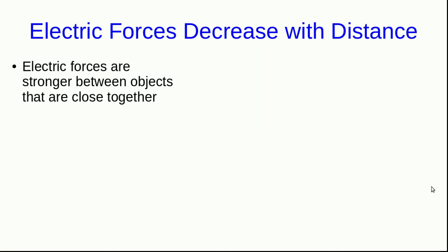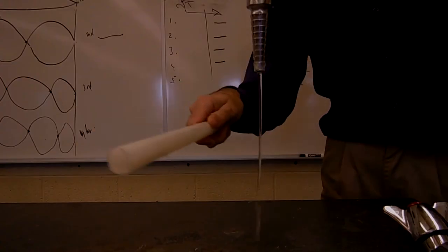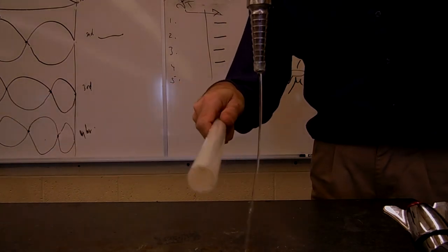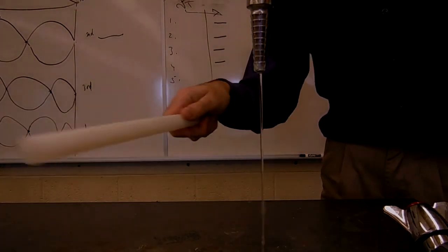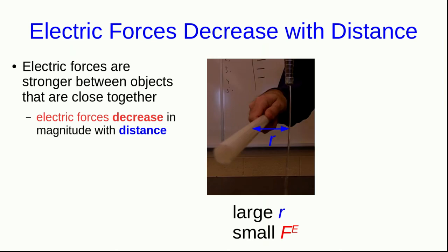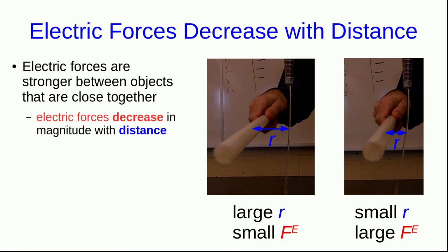All through the various demonstrations that I've shown video of, and in any experience that you have with electric forces, you may have noticed that electrical forces are stronger between objects that are close together. Or in other words, electric forces decrease in magnitude with distance. I think the clearest demonstration of this in the videos I've shown is with the charged rod attracting the stream of water. We can see from the angle that the water is deflected that that attraction is stronger when the rod is closer to the stream than it is when it's farther away. So at large distance, and let's call this distance r, we have a small electrical force that the rod is exerting on the stream of water. And when we reduce that distance r, we get a larger electrical force.